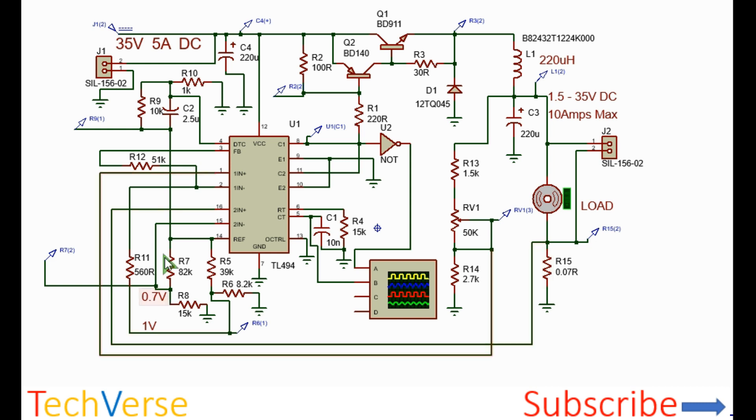For current sensing, I'm using the second error amplifier connected to pin number 16. Pin number 14 generates 5 volts when the IC is powered on. Using these resistor divider networks, I have obtained a reference of 1 volt and 0.7 volts. 1 volt is for the output voltage sensing and 0.7 volts is for the output current sensing and limitation.